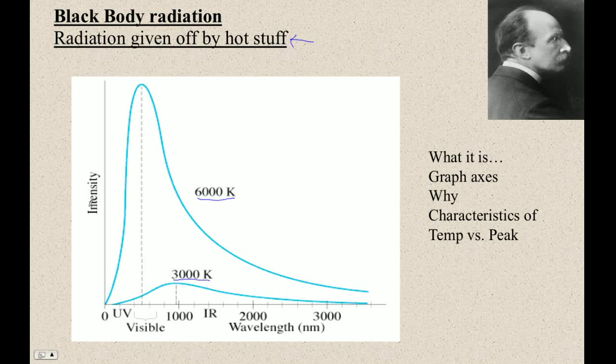So if you look at this axis, this is the intensity. And then this is the wavelength. This is large wavelength, this is small wavelength. Visible light comes in here, 400 to 700 nanometers.